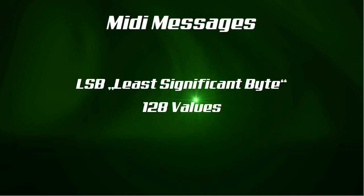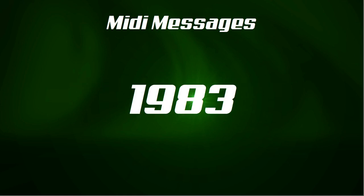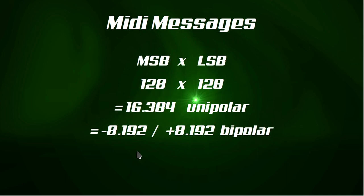LSB means Least Significant Byte. This pairing for higher values was necessary because MIDI was released in 1983 and 128 states were already a lot, and each byte was very expensive. The possibility to use the two CCs separately or as a paired message was a very flexible way to deal with many different controllers and synthesizers. Pairing MSB and LSB means multiplying them: 128 × 128 equals 16,384 unipolar values, or −8,192 to +8,192 bipolar values.